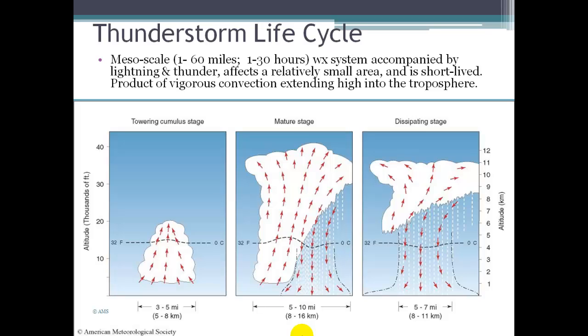Thunderstorms are what we call mesoscale weather systems. Mesoscale means it's about 1 to 60 miles in size and lasts anywhere from 1 to 30 hours. It's accompanied by lightning and thunder, affects a relatively small area, and is short-lived. Thunderstorms are always the product of vigorous convection that extends high up into the troposphere.